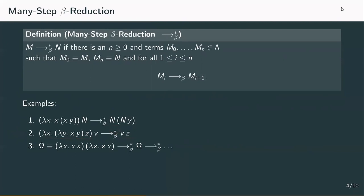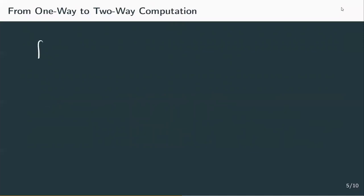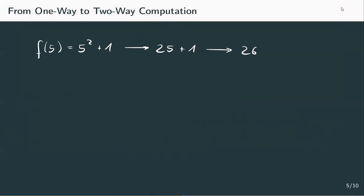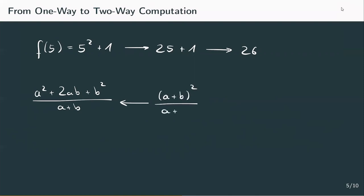So now we're able to reduce and substitute in terms. Unfortunately, we're still not quite capable of actually computing anything. What we have so far is the ability to say f of 5, which was equivalent to 5 squared plus 1, can be reduced to 25 plus 1, which can obviously further be reduced to 26. But we have no symmetric equality sign, and therefore we can't undo any computations. To see why this is preferable, consider a squared plus 2ab plus b squared, divided by a plus b. If we undo the binomial expansion, we transform our term into a plus b squared divided by a plus b, which equates to a plus b. So we needed to undo the computation of the binomial formula to simplify the term. This two-way computation is an extension of beta reduction and is called beta equivalence or beta conversion.